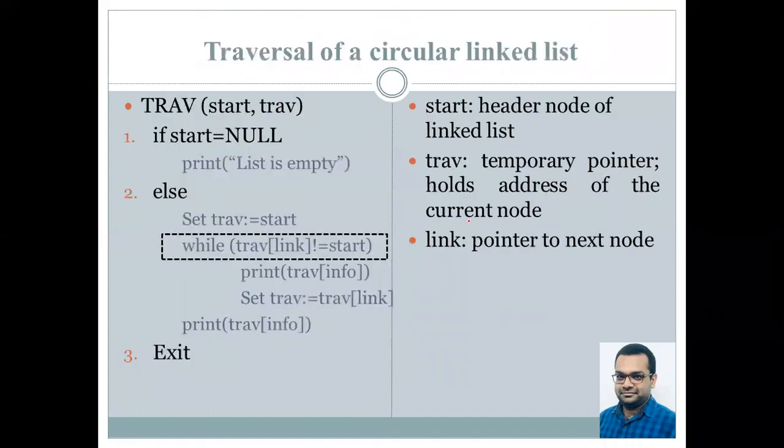So we have called our procedure TRAV. We have a start pointer and the temporary pointer that is TRAV. So we initially check if start's value is null, so we simply print that list is empty and it is not possible to traverse through the linked list. If this is not the case, then the control jumps to the else part where we initialize traversal with the address of the first node.